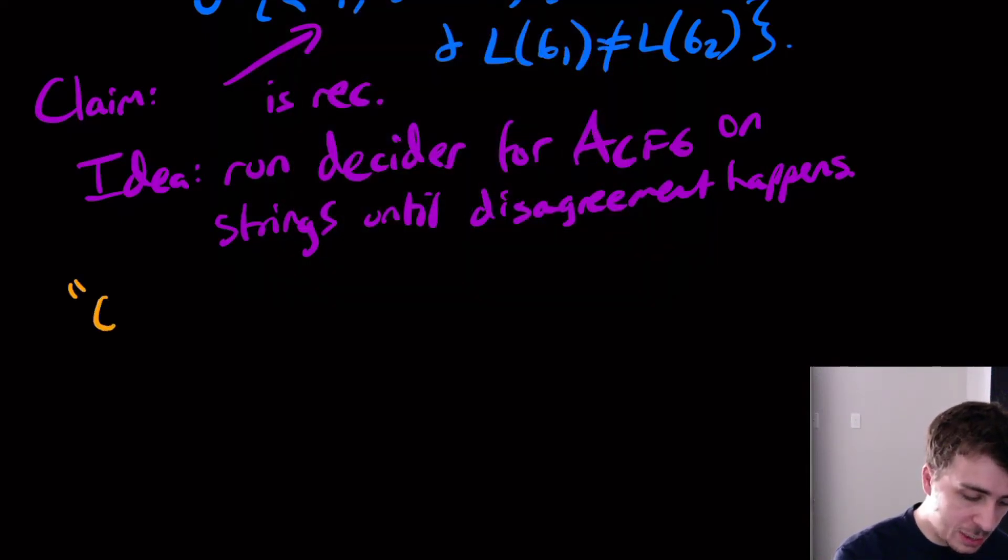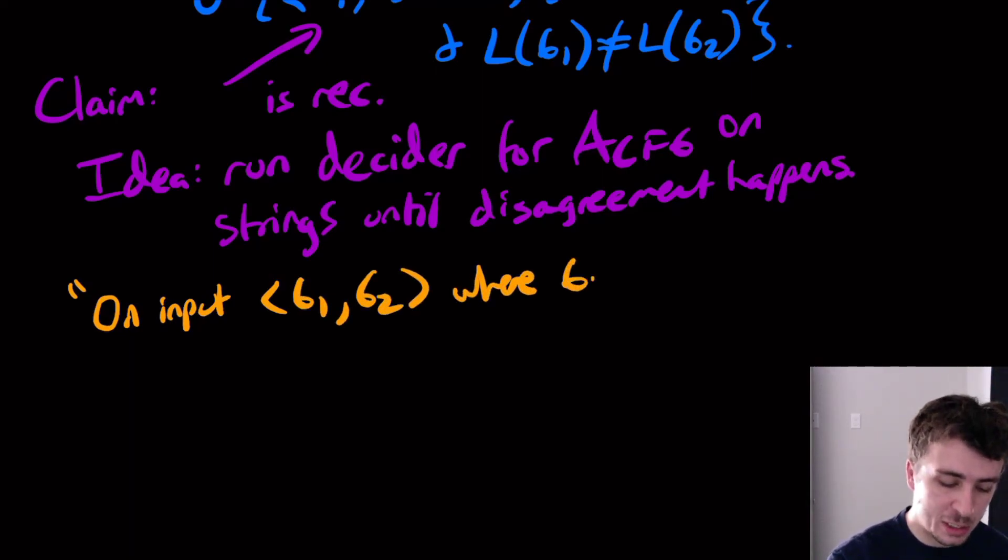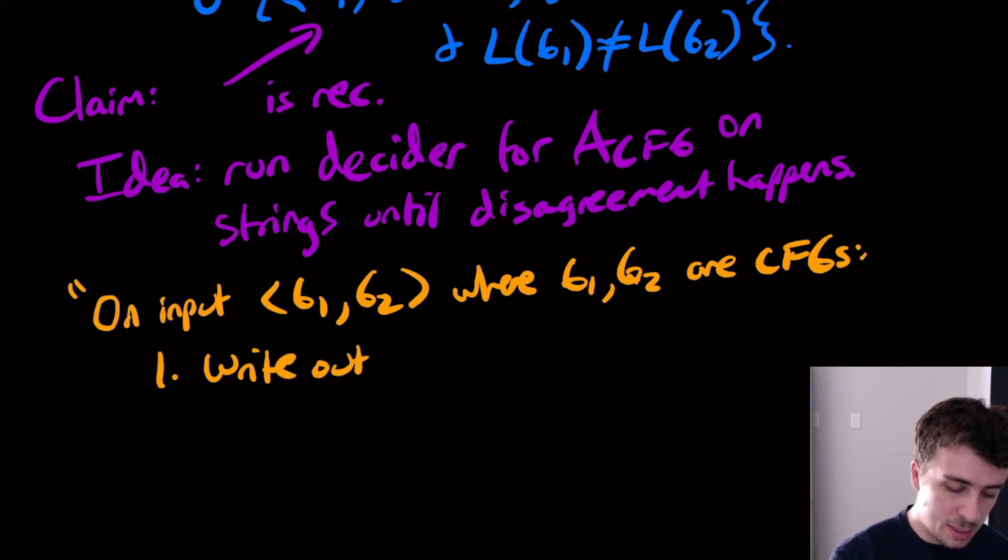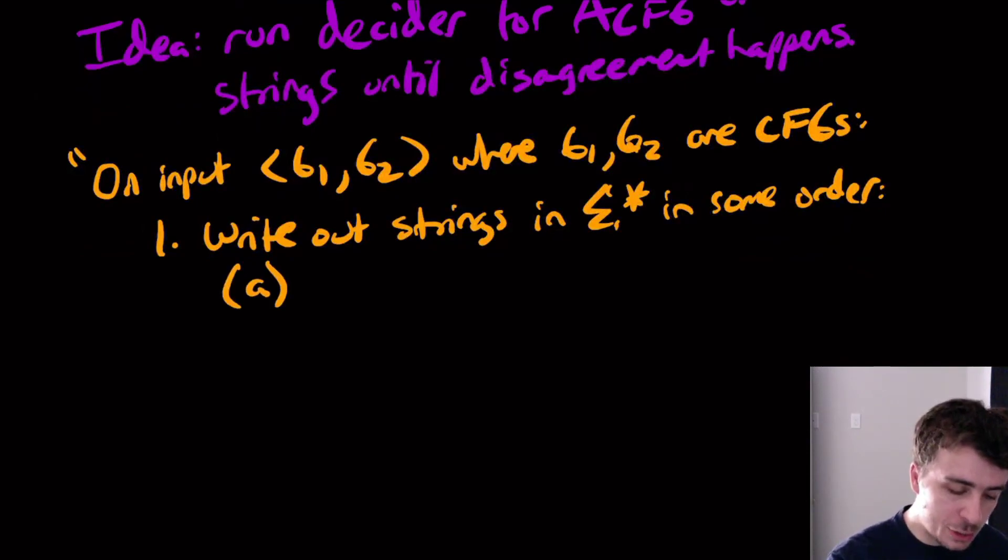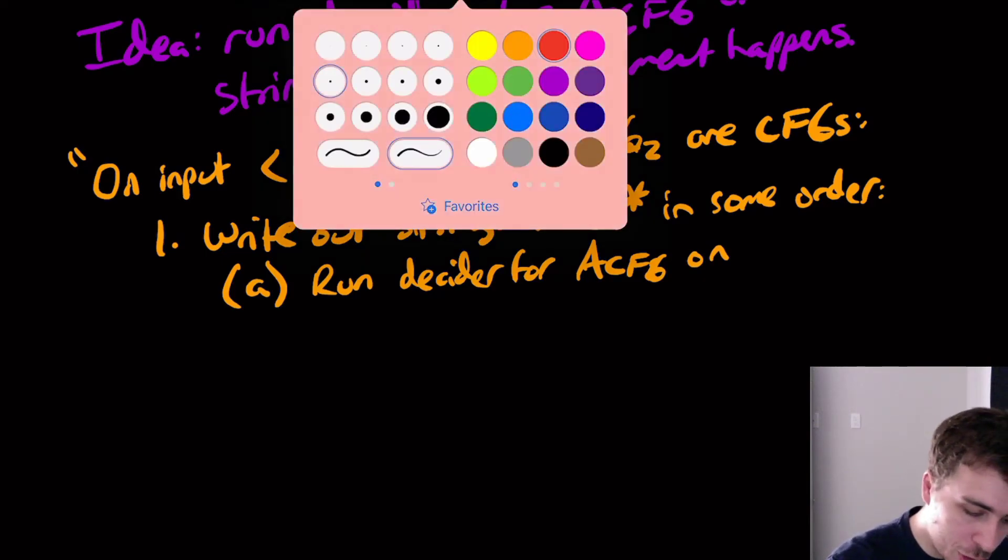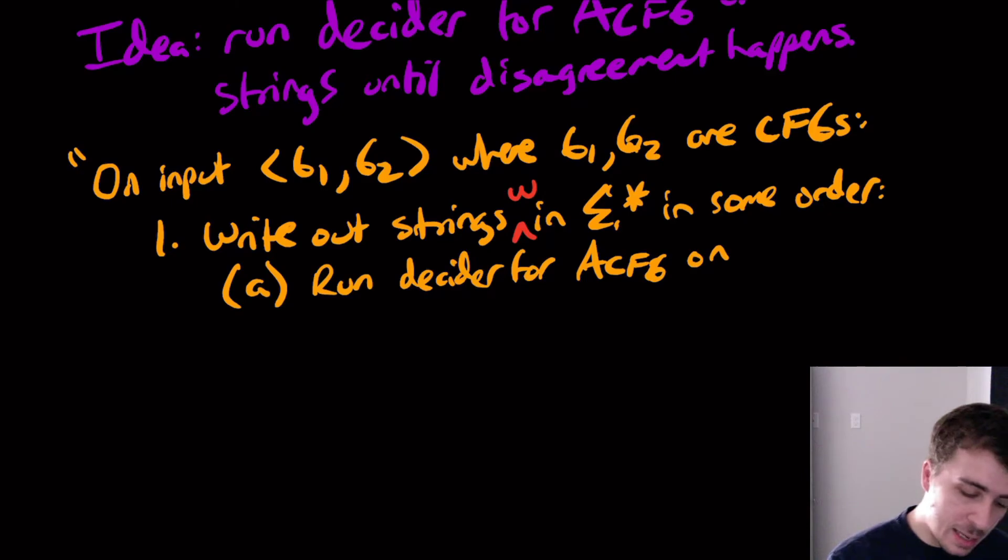So what we're going to have here is on input G1, G2 where they really are CFGs. Then what we're going to do is write out the strings in sigma star in some order. It does not matter what the order is as long as we go over the strings in some order. Then we're going to run the decider for A_CFG on G1 and W, as well as G2 and W.